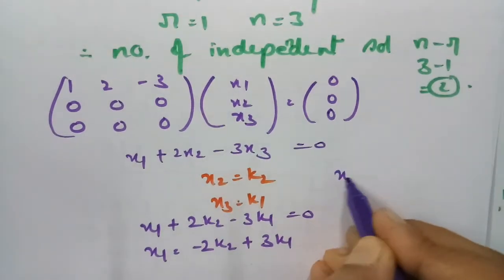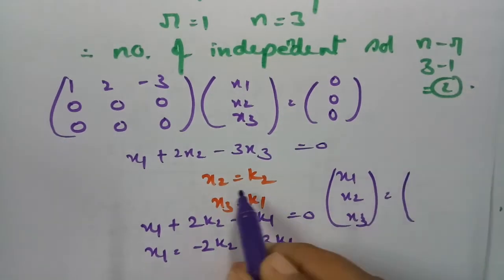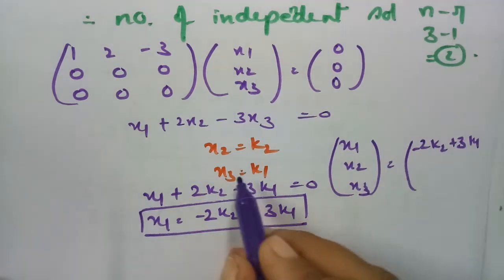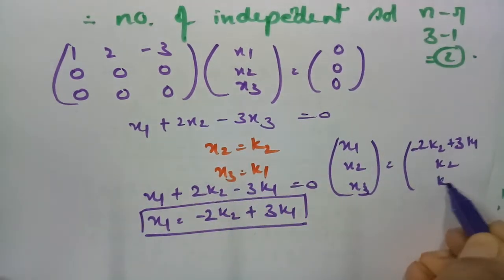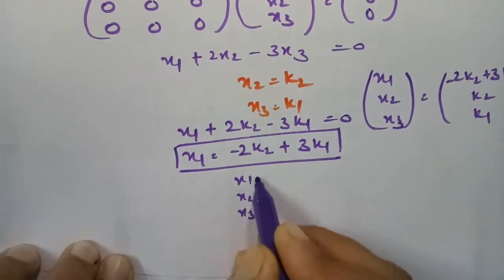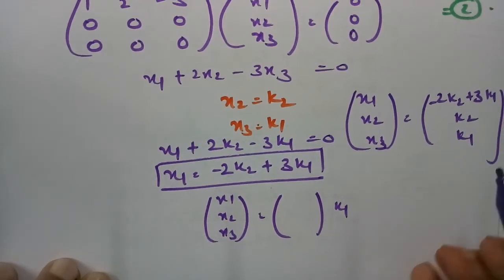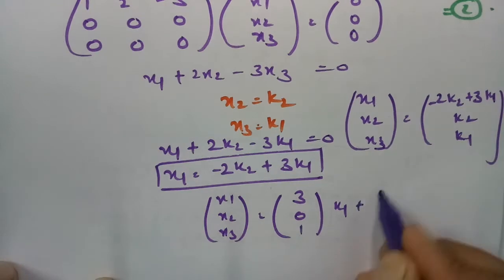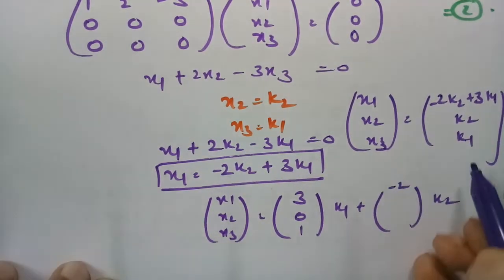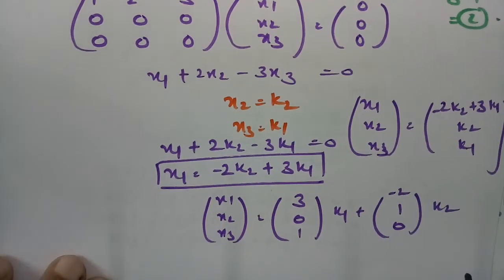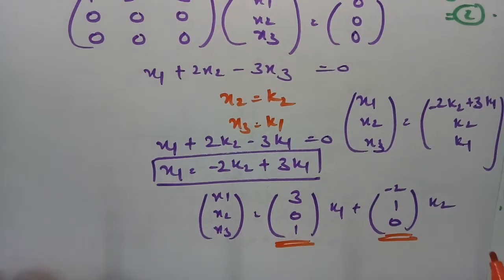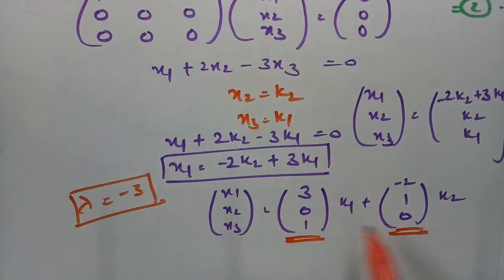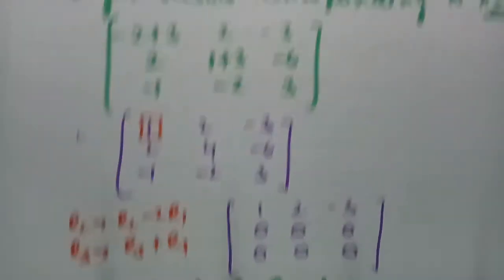Writing x1, x2, x3 in terms of k1 and k2: [x1, x2, x3] = k1[3, 0, 1] + k2[−2, 1, 0]. Therefore the two independent eigenvectors corresponding to λ = −3 are (3, 0, 1) and (−2, 1, 0).